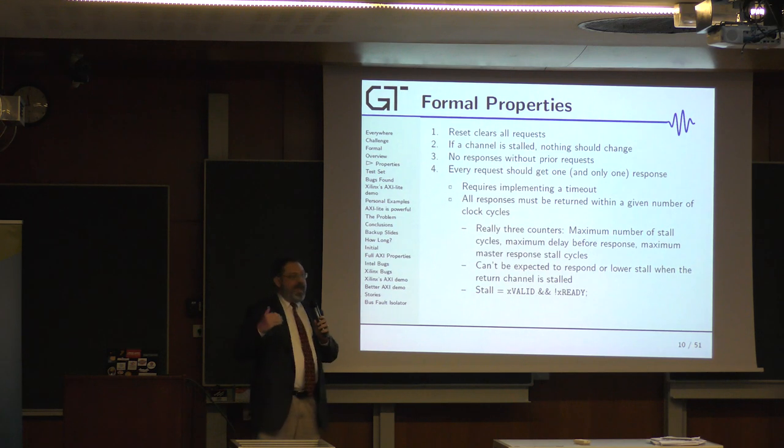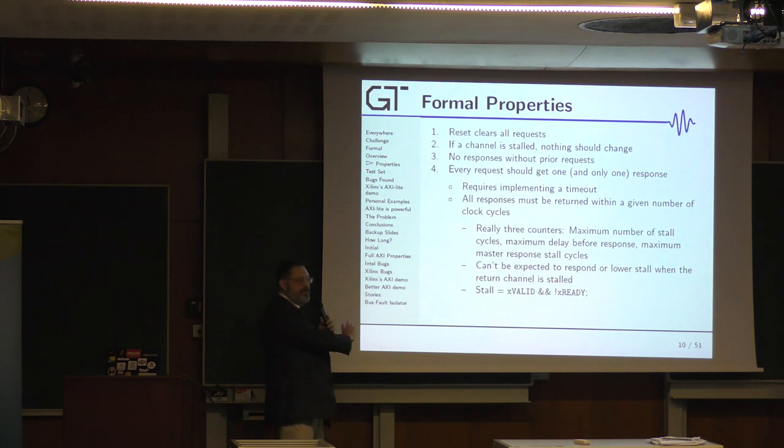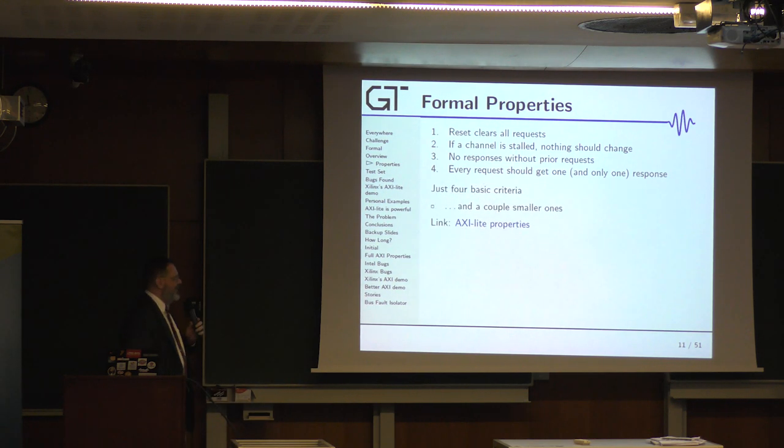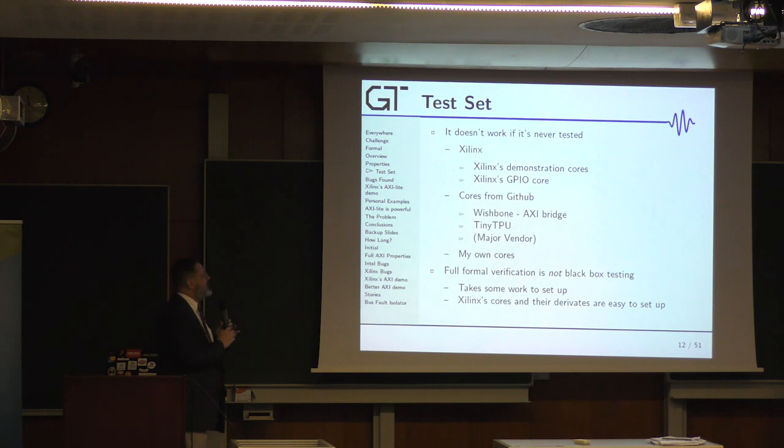Number four, keeping this really simple, every request should get one, and only one, response. Basic properties. You think everybody would follow these properties. I'm going to add a couple others. All the properties, by the way, all of these AXI Lite properties, these are all posted on my Wishbone to AXI site. You'll get a link to that later.